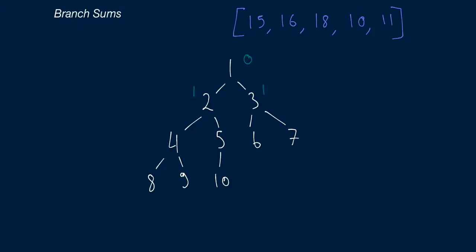We would now call this function recursively on those two nodes with the running sum as 1. At both of these nodes, we still have children nodes. For instance, node 2 has a 4 and a 5 to the left and right; node 3 has a 6 and a 7. So we're going to once again recursively call this function, passing the new running sum — which for node 2 is 1 plus 2 equals 3, and for node 3 is 1 plus 3 equals 4.